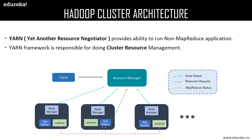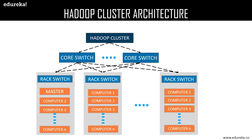The node manager is a Java utility that runs as a separate process from the web logic server, allowing you to perform common operations for a managed server regardless of its location with respect to the administration server. The app master is responsible for negotiating resources between the resource manager and node manager. The container is a collection of reserved resources allocated from the resource manager to work with the task assigned by the node manager. The Hadoop cluster architecture consists of racks, each containing a set of computers, with one rack containing the master, and racks using co-switches to communicate with each other.